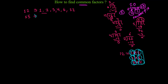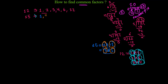Similarly, now I'm going to write all the factors of 15. The first factor is 1. Then 3, then 5 — since 5 times 3 equals 15. Numbers like 4, 6, 7 cannot divide 15, but 15 itself can. So the factors of 15 are 1, 3, 5, and 15.